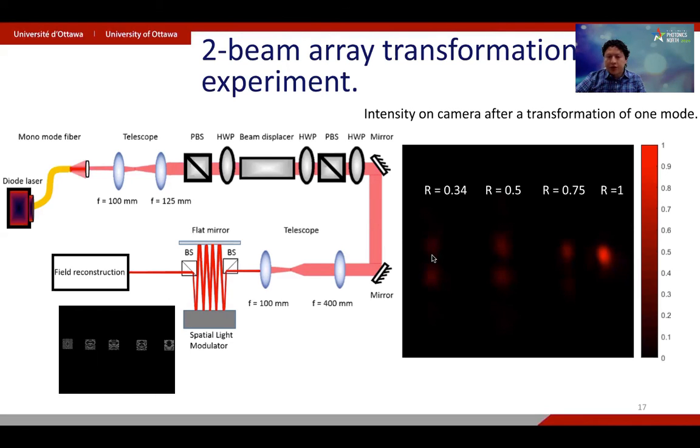So here we show the intensity on a CCD camera for different transformations. So here I'm varying the reflectivity of the beam splitter transformation. This is the case of a reflectivity of 0.34. This is the case of a 50-50 beam splitter. Then a reflectivity of 0.75. And finally, a completely reflective beam splitter that corresponds to swapping the two modes. So in order to quantify how well we are doing, we need to actually look at the amplitude and phases of the field at the output. And we plan to do that when we go back to the lab.